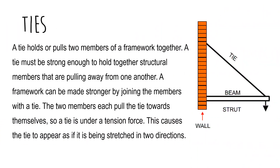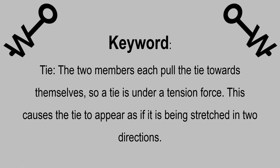Ties. A tie holds or pulls two members of a framework together. A tie must be strong enough to hold together structural members that are pulling away from one another. A framework can be made stronger by joining the members with a tie. The two members each pull the tie towards themselves, so a tie is under a tension force. This causes the tie to appear as if it is being stretched in two directions.